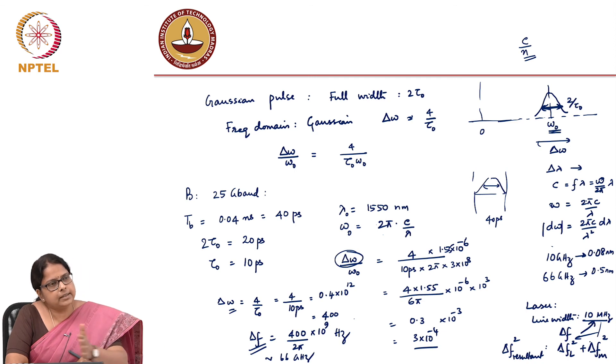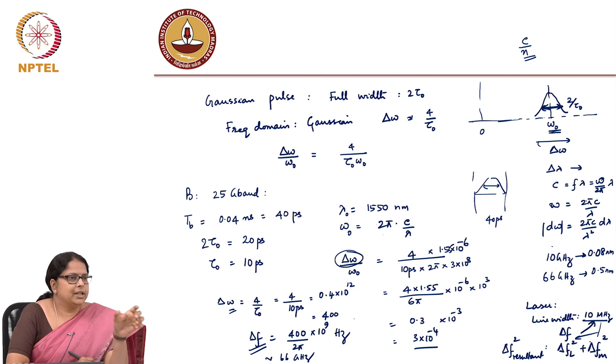So, in all this discussion on dispersion that we are going to do, we will keep talking about spectral spread. And you have to use your wisdom to decide what that spectral spread is. Is it that of the source? Is it that of the modulator or is it that of a combination? Depending on the relative numbers, you have to pick the right number.